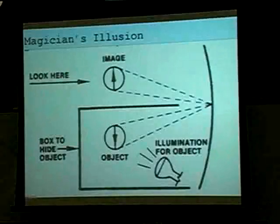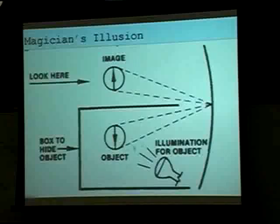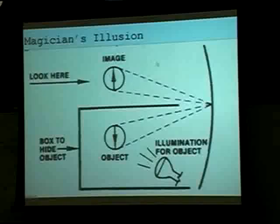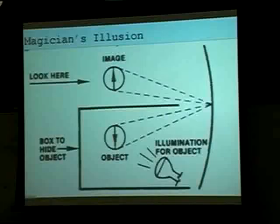Here's a magician's illusion. If you illuminate an object and have a concave mirror, you create a real image of that object somewhere else. If the image converges very well, someone might actually think that object exists at that location because light appears to come from that point — whereas the object might not actually be there. A lot of times when magicians make something appear or disappear, it's a clever use of mirrors.